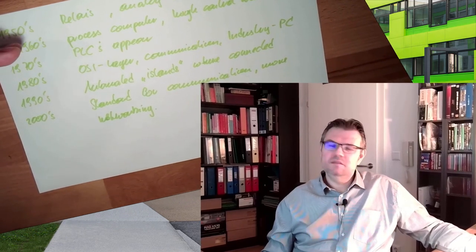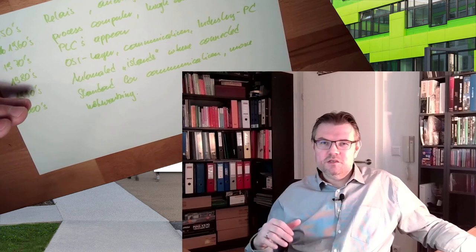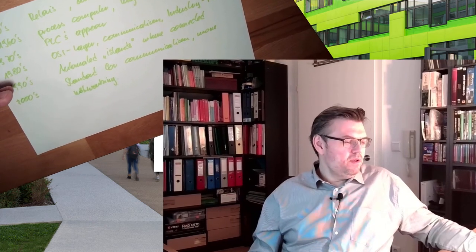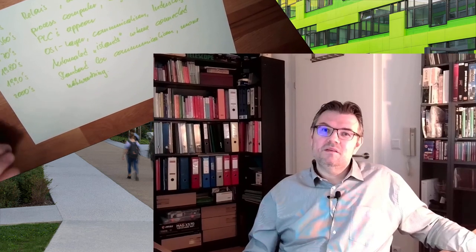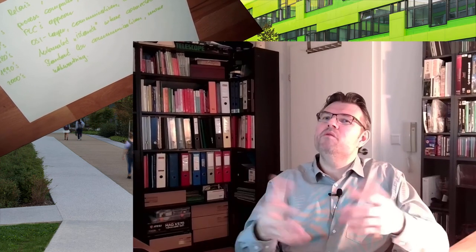That's the history of automated systems. Relays in the 1950s. In the 1960s, process computers, huge control walls. 1970s, PLCs. 1980s, communication started between the things even on small scale. Industry PCs appeared. In 1990s, these automated islands were interconnected to each other. And in the 2000s, standards for communication were widely spread and interoperability was finally achieved. So like I said, Ethernet is pretty important. Also other field bus systems like CANbus or Modbus or Profibus for instance are there in the field. However, above the field level most of it is running on Ethernet and TCP/IP.